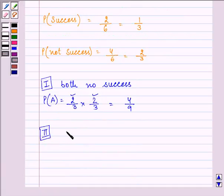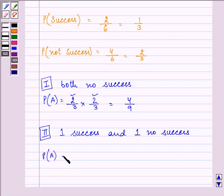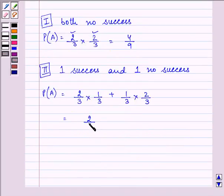Secondly, we have 1 success and 1 no success. So, here it may happen that for the first time success does not occur and the second time it occurs, or first time success occurs but the other time it does not. So, we have 2 by 9 plus 2 by 9 which is further equal to again 4 by 9.